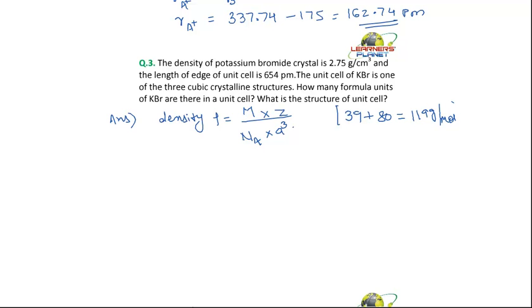So let's find out. What do we need to find out? We have to find out the number of formula units per unit cell. That is in one unit cell, there are how many particles of potassium bromide.